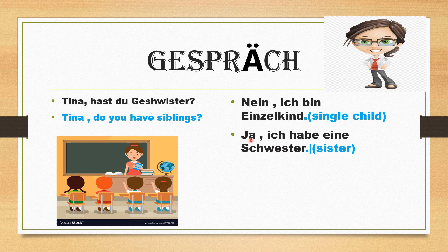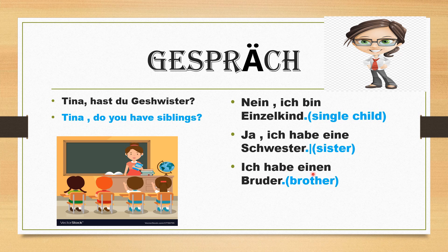'Ich habe einen Bruder' — I have one brother. Let's say it once again: Hast du Geschwister? Nein, ich bin ein Einzelkind. Ja, ich habe eine Schwester. Ich habe einen Bruder. Notice that Schwester is feminine so we add -e: eine Schwester. Bruder is masculine, nominative like 'der', so we add -en: einen Bruder.